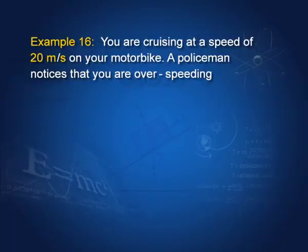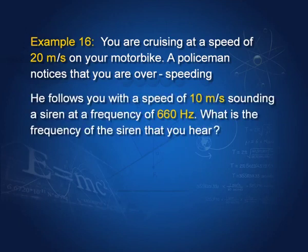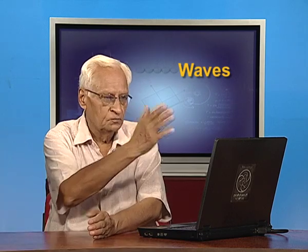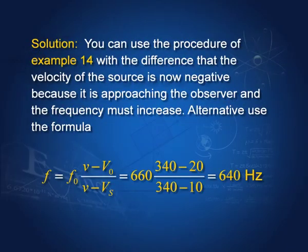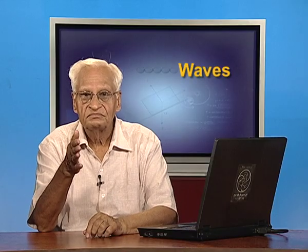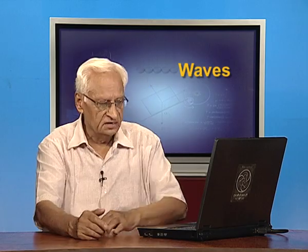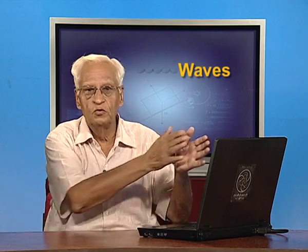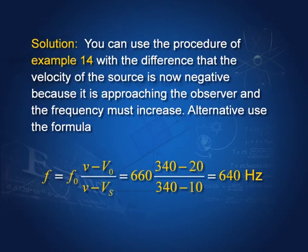You cruise away on a motorbike at 20 m/s; a policeman follows at 10 m/s sounding a siren at 660 Hz. The observer (you) moves away, so v₀ is negative; the source (police) approaches, so vₛ is also negative. Substituting these values into the Doppler formula gives a frequency of 640 Hz heard by you.